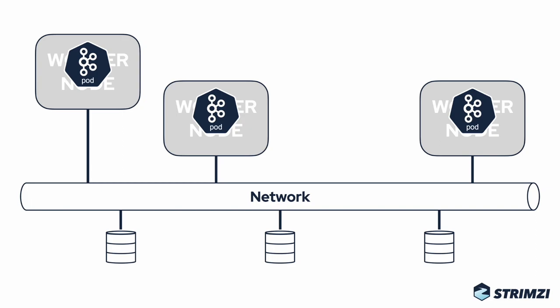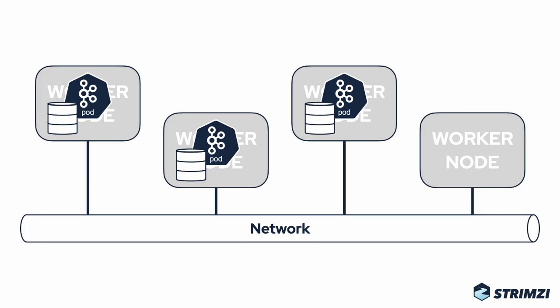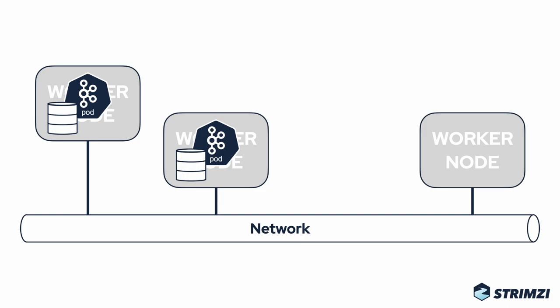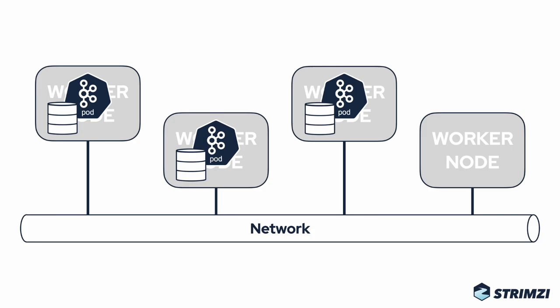Now let's look at what would happen in the same scenario when using local storage. You have four worker nodes with Kafka brokers running on three of them, but this time the storage is local and located directly on the worker node. When you need to do maintenance or the node crashes, the node is gone — and the pod cannot be scheduled on another empty node because the disk with its data is gone too. You have to wait until the problem is fixed or maintenance is complete and the node starts up again before all three brokers are running.